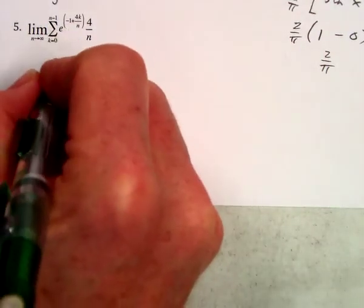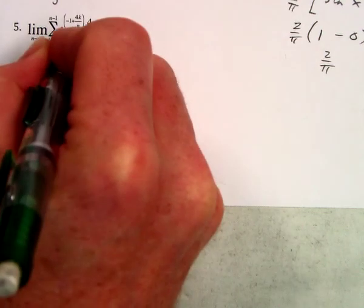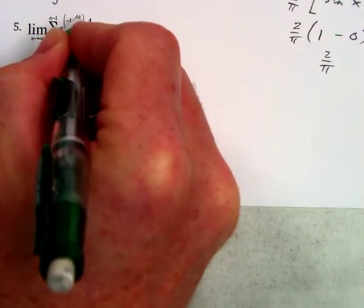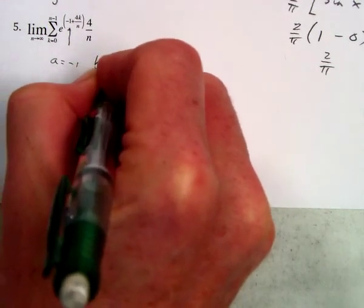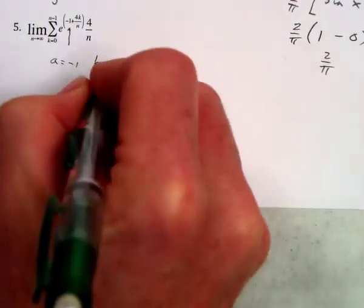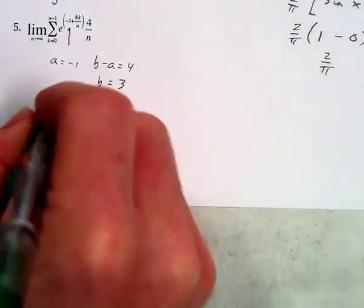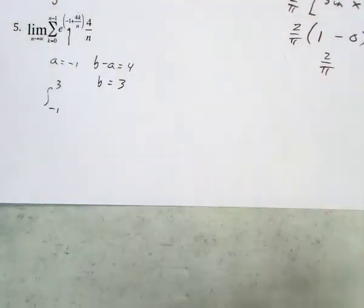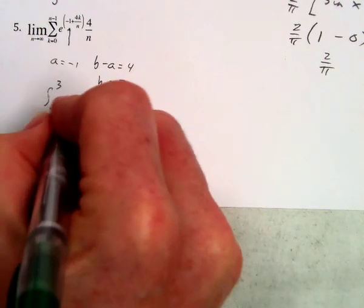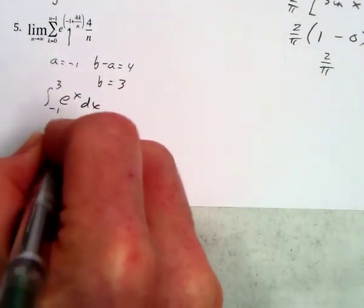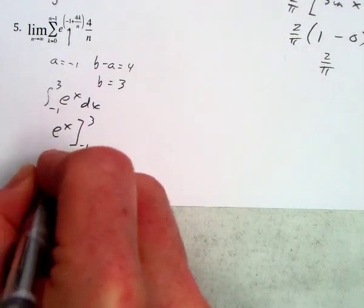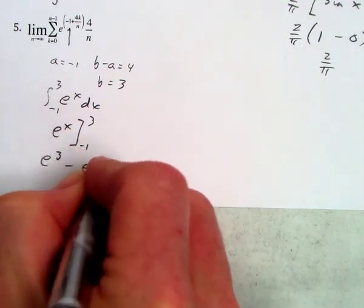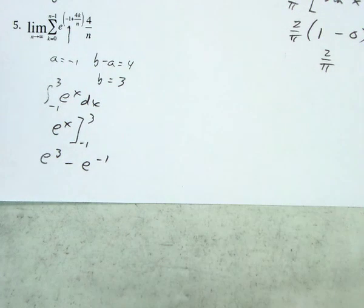Looking at this, we have a equals negative 1. This time our delta x agrees on the inside and outside, so b minus a equals 4, therefore b equals 3. We're going from negative 1 to 3, and our function is e to the x dx. That's just e to the x evaluated from negative 1 to 3, giving us e cubed minus e to the negative 1. You don't need to simplify that further. And that's all there is.